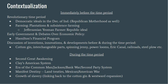Some great context would be discussions of inventions, innovations, and developments before and during the prime time period, like the cotton gin, spinning jenny, and Erie Canal. There could have been a lot of evidence that would work for context in the time period, but some of the major topics could possibly be the Second Great Awakening, Clay's American System, the era of the common man, Manifest Destiny, and the growth of slavery.